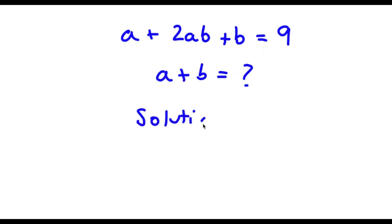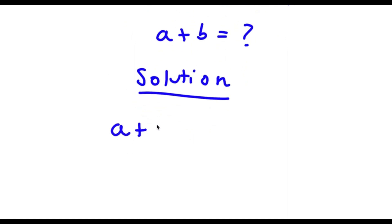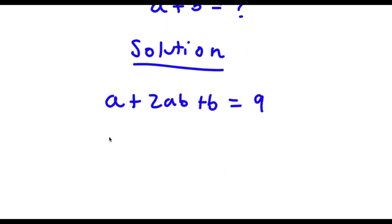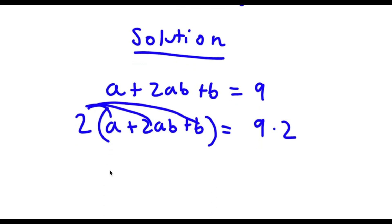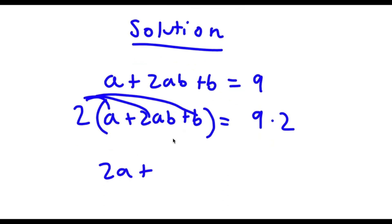For my solution, first start with a plus 2ab plus b is equal to 9. I'm actually going to multiply both sides by 2. So now I have a plus 2ab plus b times 2 is equal to 9 times 2. For 2 times (a plus 2ab plus b), I'm going to distribute the 2. So 2 times a is 2a, plus 2 times 2ab is 4ab, plus 2 times b is 2b. And 9 times 2 is 18.